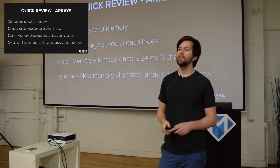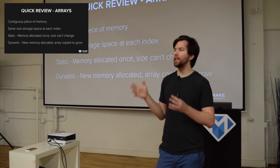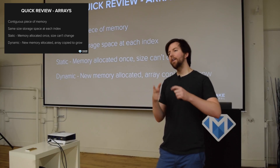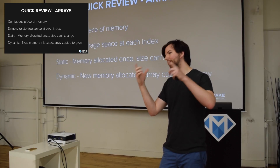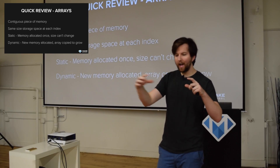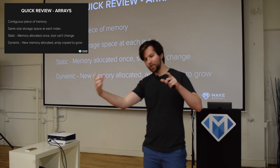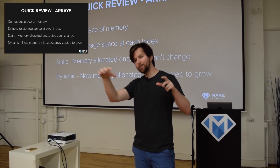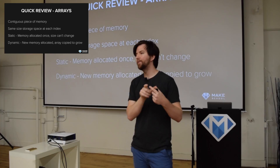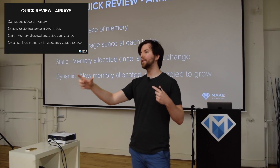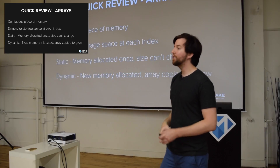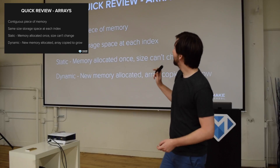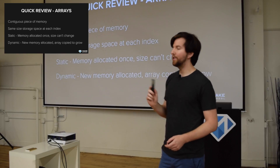Arrays are allocated as a contiguous piece of memory — that's really important. That means when you store things in an array, if you were to open up the RAM and look at the actual cells in memory, you would see that all the data is stored sequentially at sequential addresses. That gives us some very important properties.